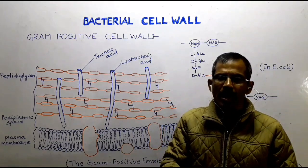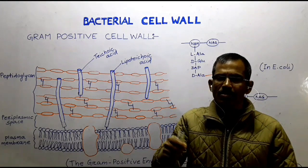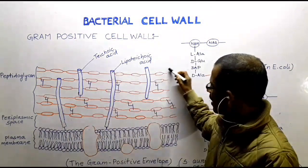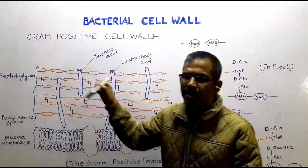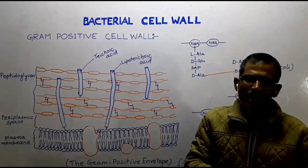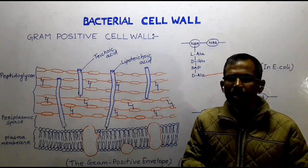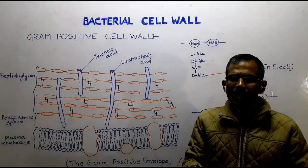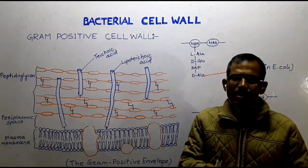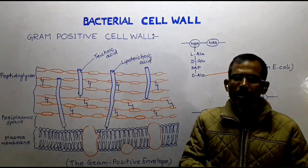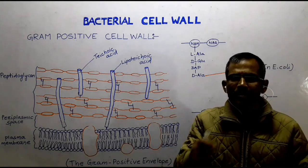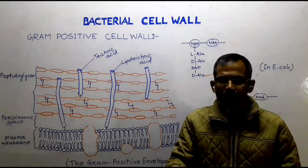In staphylococci and most other gram-positive bacteria, on the outer surface of the cell wall there is an additional protein layer called the S layer. The S layer is present in many gram-positive bacteria, gram-negative bacteria, and in archaea. The S layer consists of components which probably play a role in the interaction of the microbial cell with the environment.